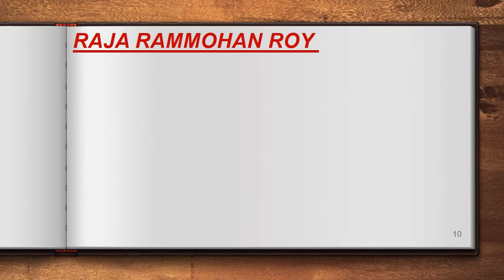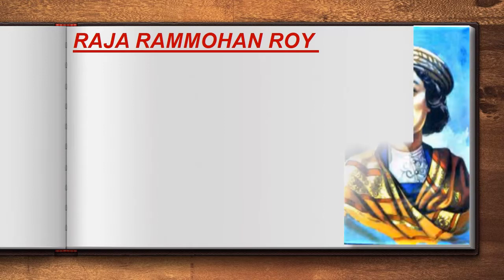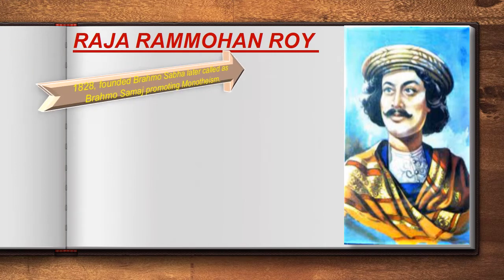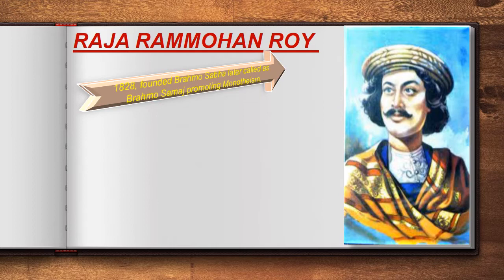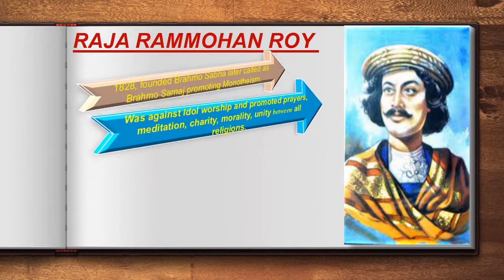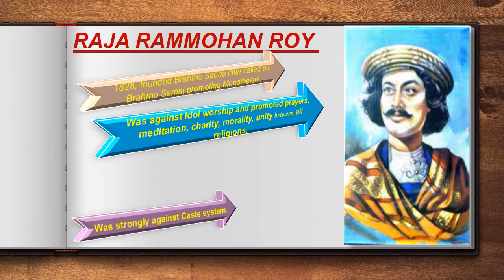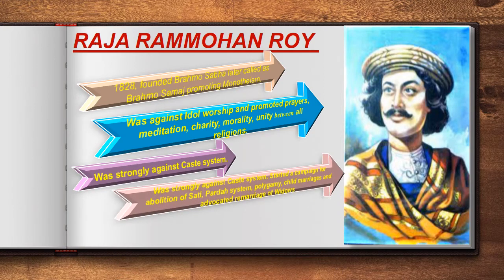Raja Ram Mohan Roy was one of the greatest social and religious reformers of the 19th century in Bengal. In 1828, he founded the Brahma Sabha, later called Brahma Samaj, promoting monotheism. He was against idol worship and promoted prayer, meditation, charity, morality, and unity between all religions. He was strongly against the caste system and started a campaign for the abolition of sati, the purdah system, polygamy, and child marriages, and advocated for the remarriage of widows.